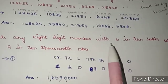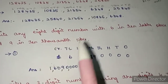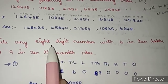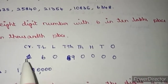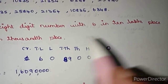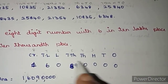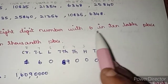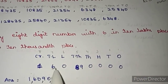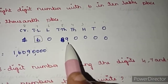Write any 8-digit number with 6 in the ten-lakh place and 9 in the ten-thousand place. We need not struggle — we will use zeros for other places. Write 8-digit place values: ones, ten, hundred, thousand, ten thousand, lakh, ten lakh, crore. In the ten-lakh place I write 6, in the ten-thousand place I write 9.